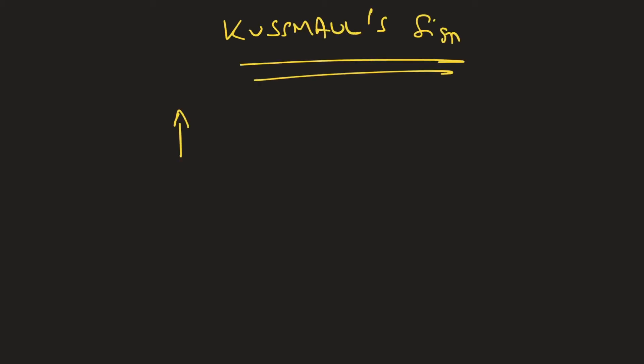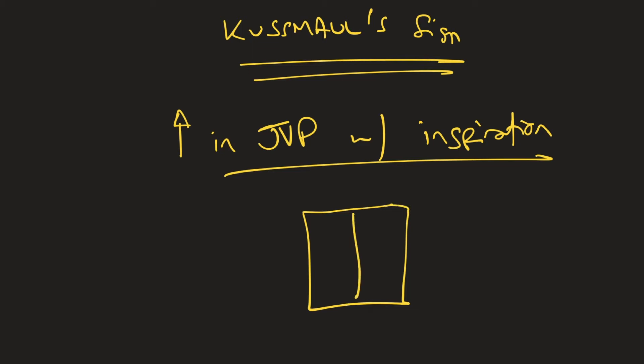Kussmaul's sign literally just means an increase in your JVP with inspiration. It's always abnormal. Your JVP is meant to go down when you take a deep breath in, and the physiology of that's kind of easy to understand. If you take a deep breath in, what you're doing to get air into your lungs is you're creating a negative pressure in your chest. Now as soon as I say pressure, people are going to zone out, so let's just keep it really simple.